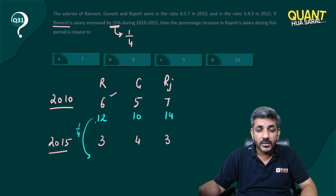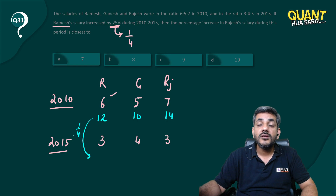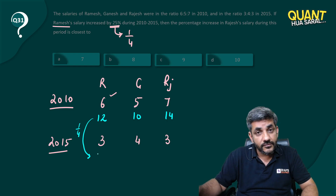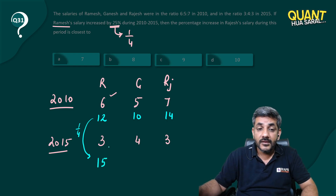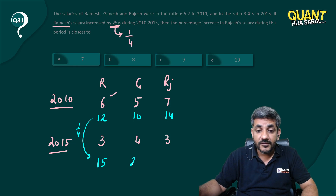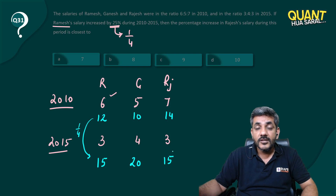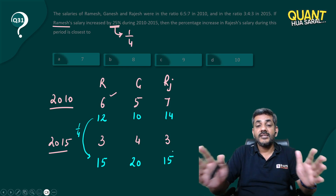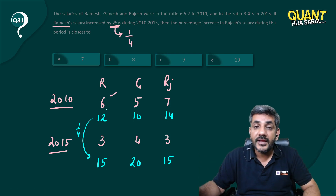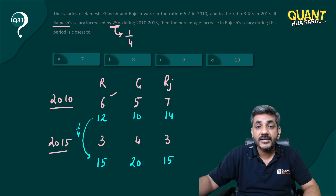If their salaries were 12, 10, and 14, Ramesh's salary increased by 25 percent — that is 1/4 — so 12 plus 1/4 of 12 equals 15. Now Ramesh's salary is 15, which is 5 times 3. So Ganesh's salary should be 5 times 4, and Rajesh's salary would be 5 times 3. Their new salaries are 15, 20, and 15.